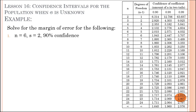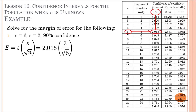Now let's try solving for the margin of error. At n equals 6, sample standard deviation is 2, at 90% confidence interval. First, find the corresponding t-value: n equals 6 and 90% confidence gives t equals 2.015. Then substitute S equals 2, n equals 6, and t equals 2.015 into the margin of error formula. The result is 1.645.